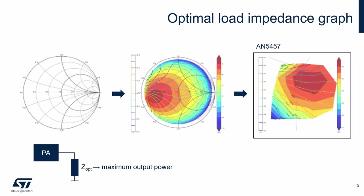The optimal load impedances of the STM32WL are summarized in application note 5457 in this form as a snippet around the maximum power. Optimal load impedance depends on many parameters like package, frequency, and power.